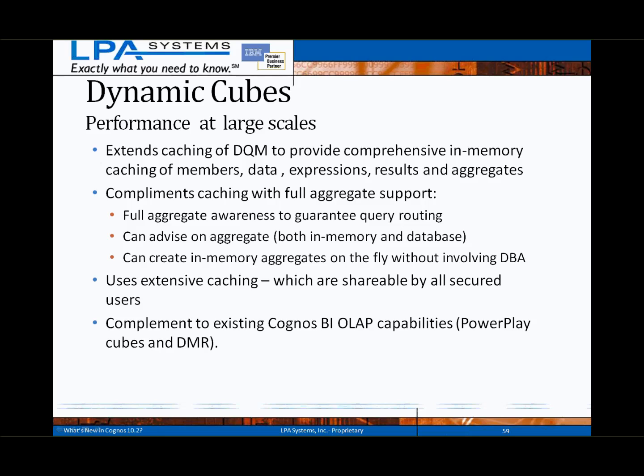In addition to utilizing in-memory caching, the dynamic query engine complements the caching with full database aggregate support. Expanded capabilities of the Dynamic Query Analyzer tool, which was originally introduced in Cognos 10 to support DQM, now provides detailed analysis and recommendations for both in-memory and database aggregates. The in-memory aggregate recommendations can be implemented on the fly directly from the Dynamic Query Analyzer.